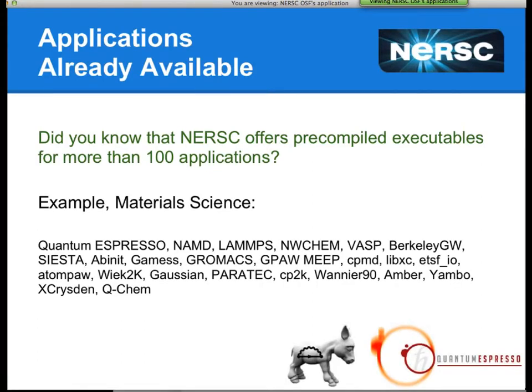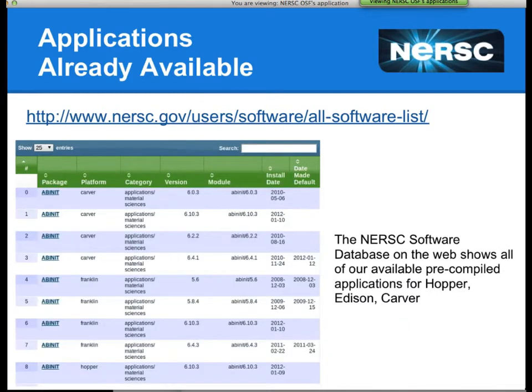For example, in the material science domain, we have quite a few applications — this is not a complete list, but you can see popular ones like VASP, Quantum Espresso, NWChem, Siesta, etc. You can see a more complete list by going to the NERSC applications URL, which shows every version on all the different machines at NERSC, when they were installed and when they were made default. So if you're looking for something, this is a good place to start.